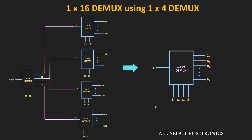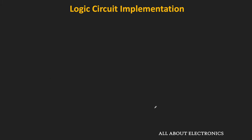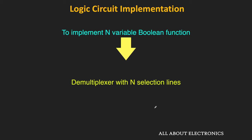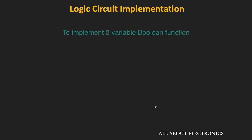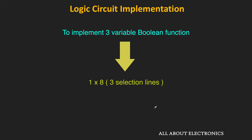Since the design of the demultiplexer is very similar to the decoder, it can also be used to implement different Boolean functions. Similar to the decoder, to implement Boolean functions with n variables, we require a demultiplexer with n selection lines. For example, to implement a 3-variable Boolean function, we need a 1×8 demultiplexer because it has 3 selection lines.